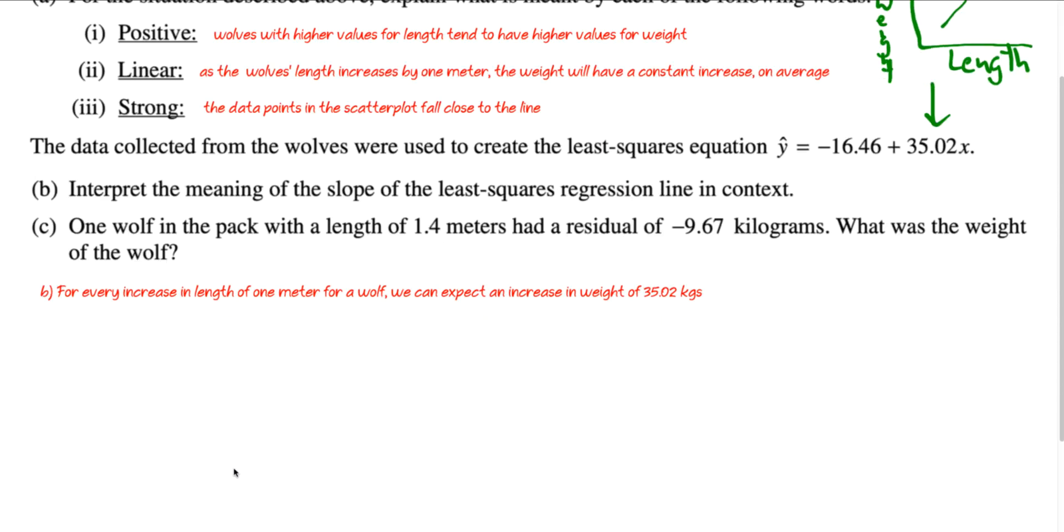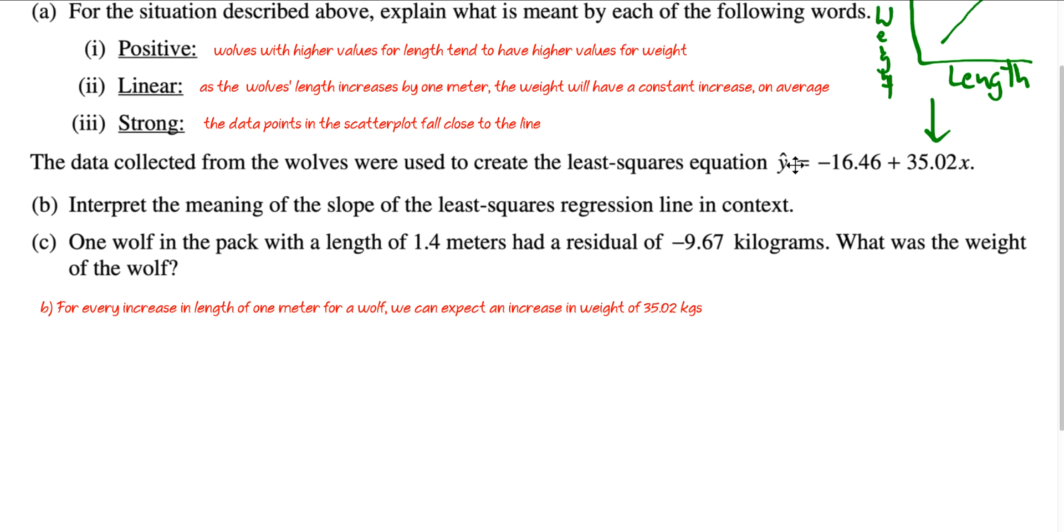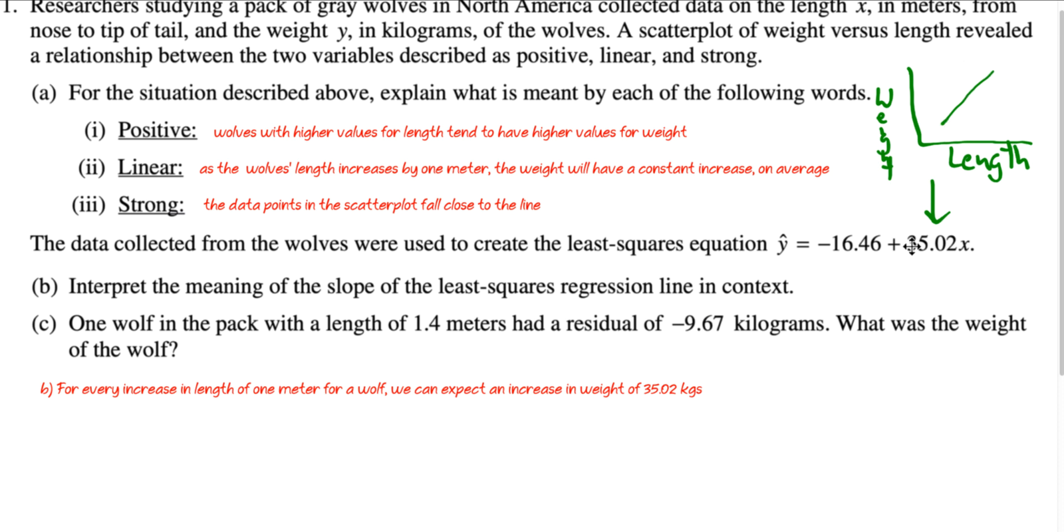That is the meaning of the slope. And lastly, for one wolf in the pack with a length of 1.4 meters, and remember this line predicts, and that's what that equation comes for. It's a prediction line. So scatter plots, I mean the whole point of them, they're not going to fall 100% on that line or else correlation would be one.